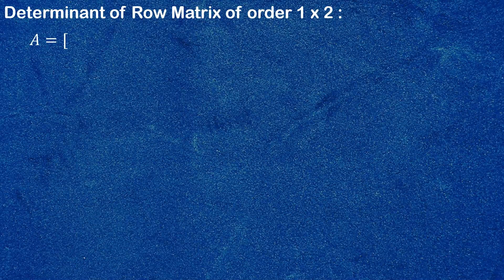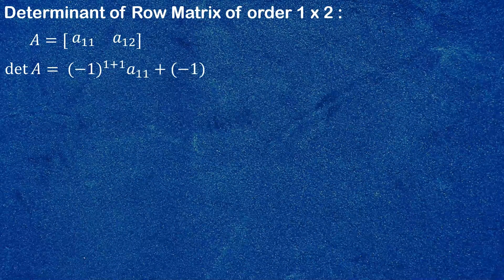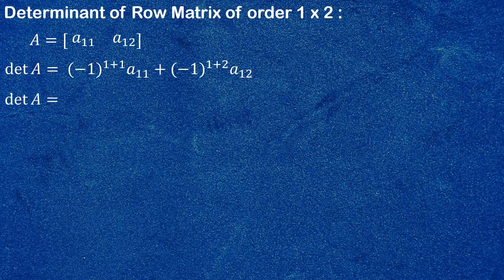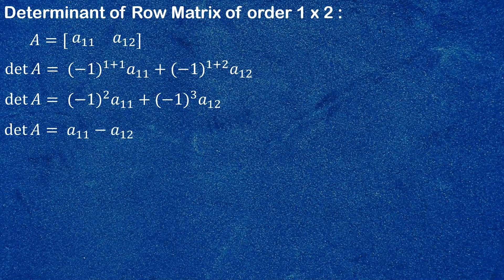Now let's move on and find the determinant of a row matrix of order 1×2. Let's take a 1×2 matrix of this form — it has 1 row and 2 columns. Its determinant is defined as: det(A) = (−1)^(1+1) · a₁₁ + (−1)^(1+2) · a₁₂. This simplifies to (−1)² · a₁₁ + (−1)³ · a₁₂, and so the determinant of a 1×2 matrix can simply be written as a₁₁ − a₁₂.